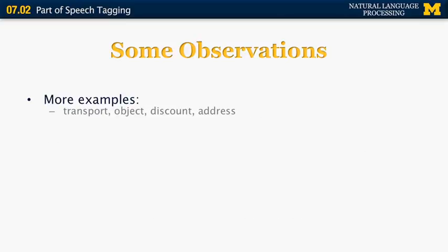Here are some words that are very ambiguous in English but not as obviously so. For example, the word 'transport' can be a noun or a verb and can also be pronounced differently — you can say 'transport' as a verb or 'a transport.' Similarly, 'object,' 'discount,' 'address,' and 'content' can each be a noun or a verb with different pronunciations and meanings.